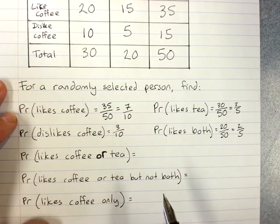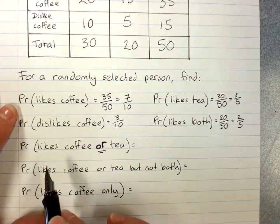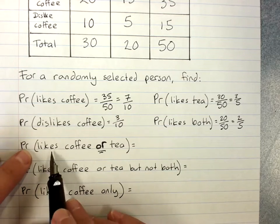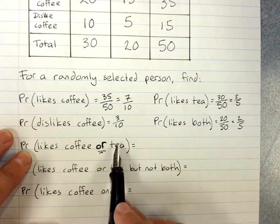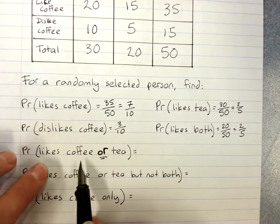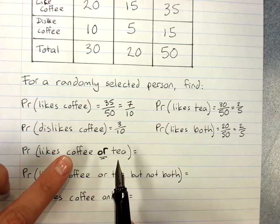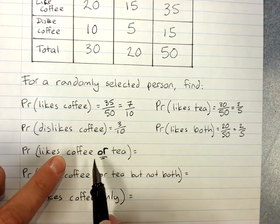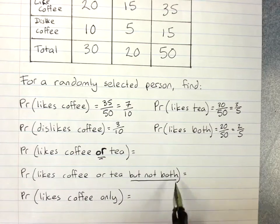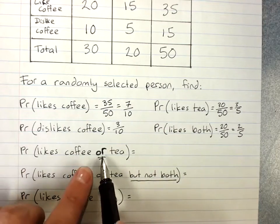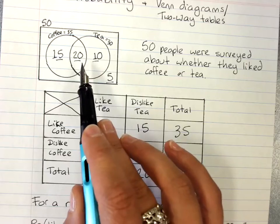The next place we're likely to get tripped up is in the OR questions. If I ask for the probability that someone likes coffee or tea, that means either coffee or tea or both. That's saying anyone who put their hand up at all for coffee or tea. If I wanted to ask about people who liked coffee or tea but not both, I'd have to say both. Because if I say OR, it means either coffee or tea or both.